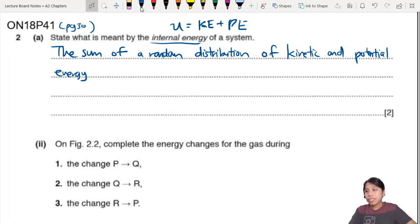When you say internal energy, you should remember that internal energy is the sum of kinetic energy and potential energy. And all these are random distributions of kinetic energy and potential energy because the particles are moving at random.